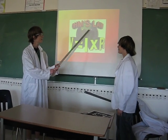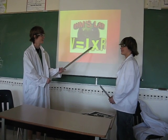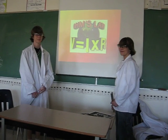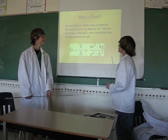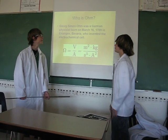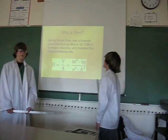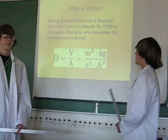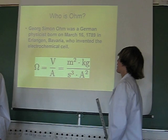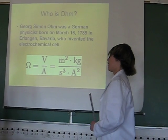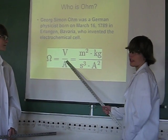Ohm's Law, and that's V equals I times R. Who's Ohm? George Simon Ohm was a German physicist born on March 16, 1789 in Erlangen, Bavaria. He invented the electrochemical cell, and that's his equation.